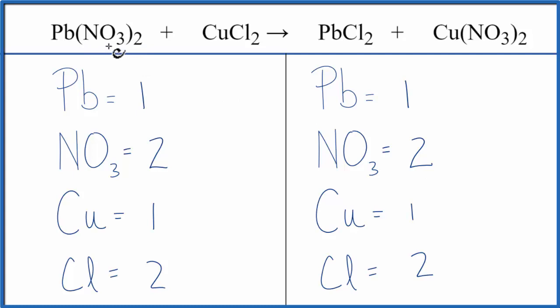By counting these polyatomic ions, like this nitrate group, as just one item when they appear on both sides, that's a really good strategy to make equations quite a bit easier to balance.